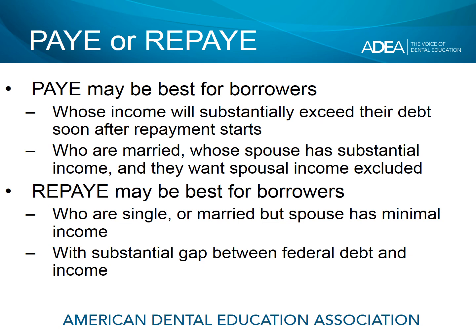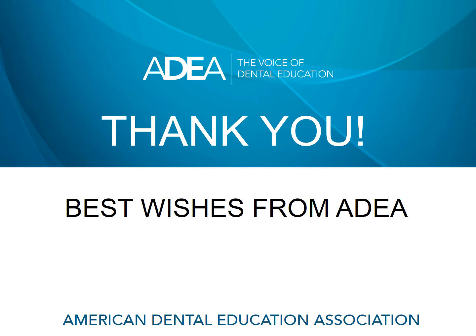REPAY may be best for borrowers who are single, since the spousal income issue is irrelevant. Or for those who are married but whose spouse has minimal income, so the inclusion of spousal income has a minimal impact on payments. REPAY may also be best for borrowers who have a substantial gap between their federal debt and income, as these borrowers should benefit from the 50% subsidy. On behalf of the American Dental Education Association, ADEA, thank you for watching. Best wishes for every success in your dental careers.